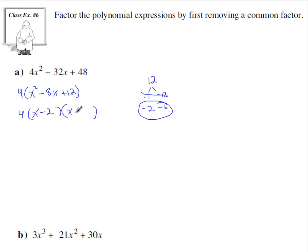Negative 2 and negative 6. And that's your final answer because you can't do any more factoring. If there was more factoring to be done, you would have to keep going.